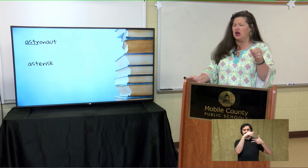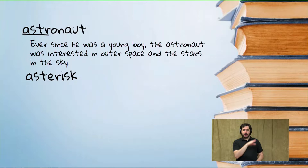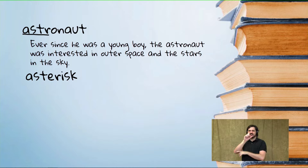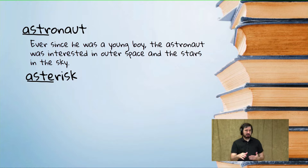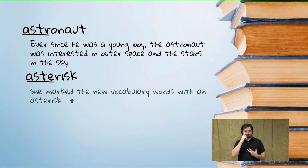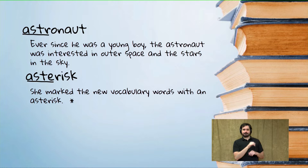Let's look at astronaut in a sentence: ever since he was a young boy, the astronaut was interested in outer space and the stars and the sky — all the celestial beings up in the sky. Now asterisk — again, star. Wonder if it looks like the stars that we draw. Sometimes it's used in multiplication problems. She marks the new vocabulary words with an asterisk — that little star. You use asterisks to cite evidence and denote something important.